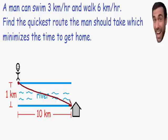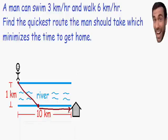Let's take a look at one more option. He can choose some point in between his house and directly across from him on the other side of the river. He can swim to this arbitrary intermediate point and then walk the rest of the way once he gets ashore. This is indeed the quickest way for the man to get to his house. This is where we use calculus and optimization to find exactly where this point is.